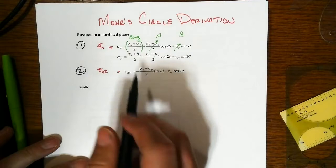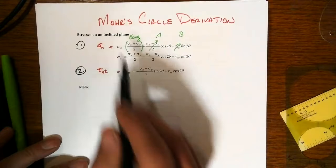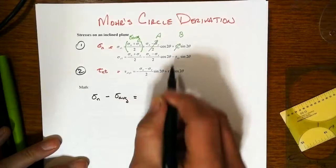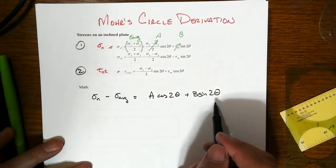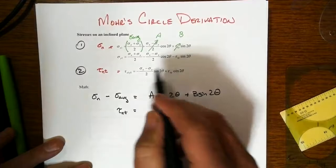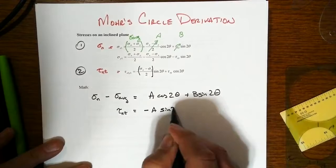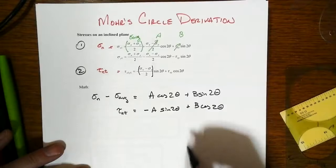The way we're going to get there is we're going to simplify. We'll take this first term, the sigma average, and take it to the other side. So we'll have sigma n minus sigma average. And then the right hand side becomes A times cosine of two theta plus B times sine of two theta. It's key that the sine and the cosine have the same angular argument. And then the second equation is tau nt. And again, we've got simplification with these coefficients here.